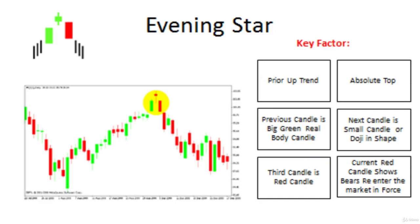The big red real candle body shows control of bears over bulls. The red candle body shows that bears have reentered the market in force. As shown in the example chart on your screen, there is a prior uptrend and at the absolute top, a green candle is formed. The next candle is a doji in shape shown in red, and the third candle is a big red real body candle, which signifies that bears are in control.